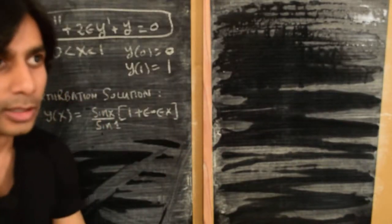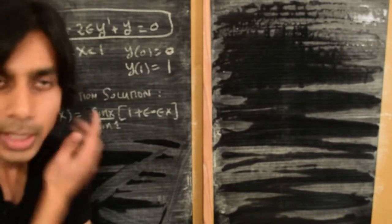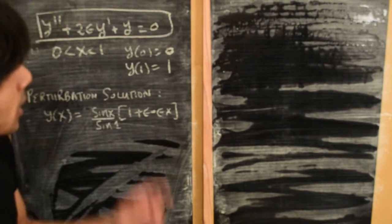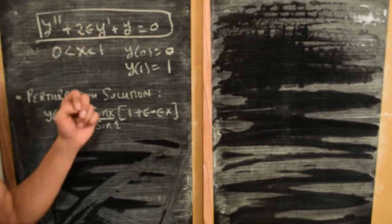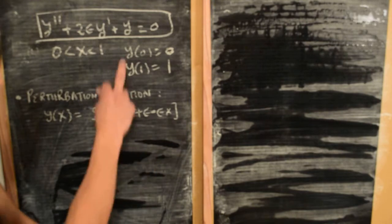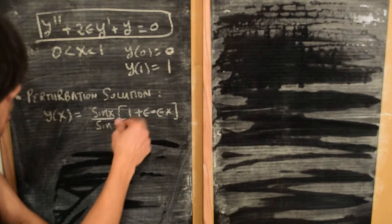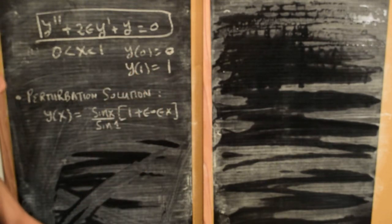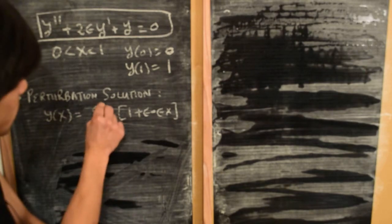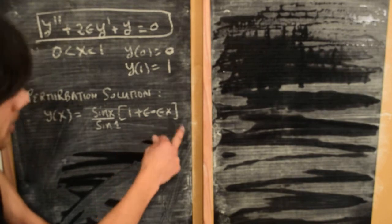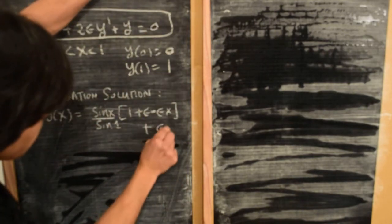Welcome back. We've done almost three videos trying to solve this differential equation using the regular perturbation method. Just as a reminder, we have a second order differential equation with a small parameter epsilon, where y is the dependent variable, x is the spatial variable, with boundary conditions y(0)=0 and y(1)=1. To big O(ε²), we found our perturbation solution to be sine of x divided by sine of 1, times 1 plus epsilon minus epsilon x.